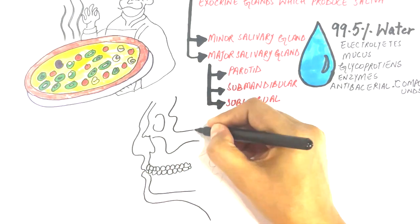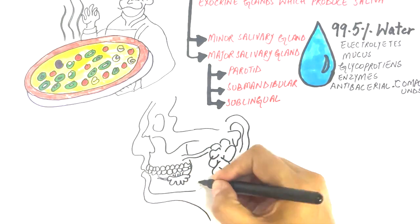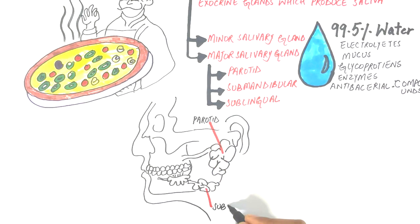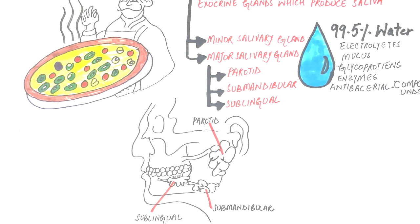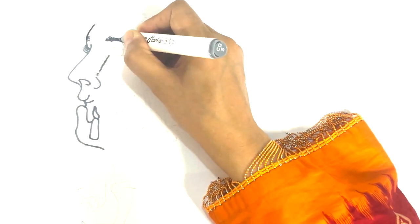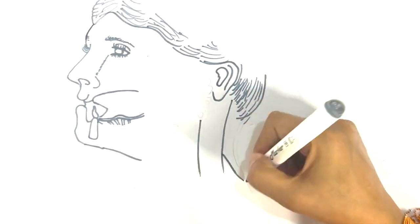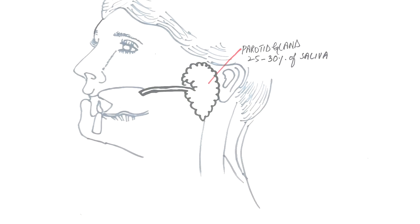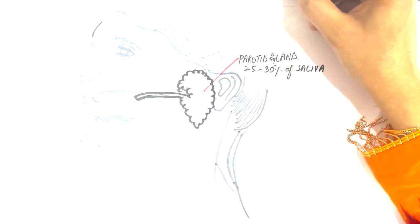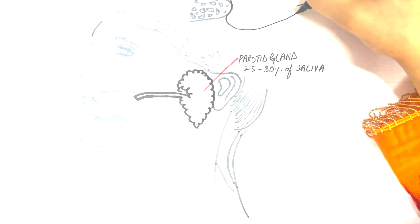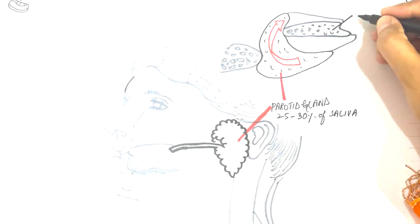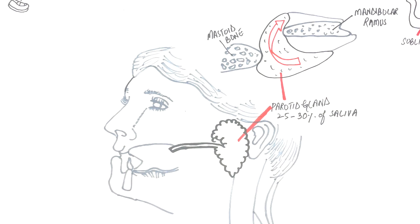The three major and paired salivary glands are the parotid, the submandibular, and the sublingual glands, shown here in this diagram. The parotid gland is the largest of all three glands. They are located anterior and inferior to the ears. It produces 25 to 30% of the total amount of saliva. The gland wraps around the ramus of the mandible in such a way that it divides into a superficial and a deep part. Both parts can be observed from this superior cross-sectional view.